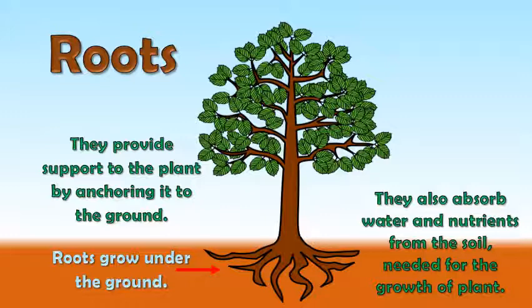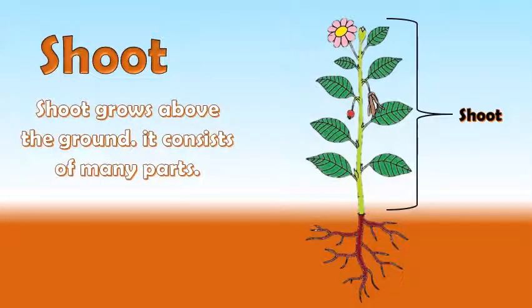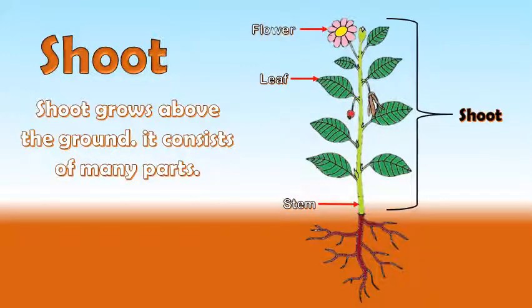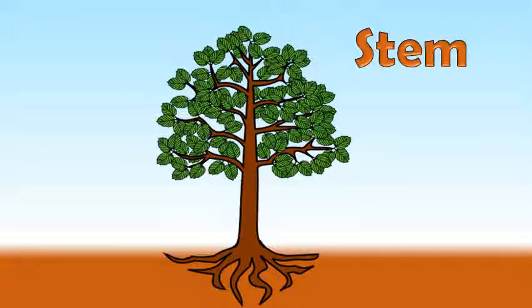Shoot grows above the ground. It consists of many parts: stem, leaf, flower, fruit, and seeds present inside the fruit.